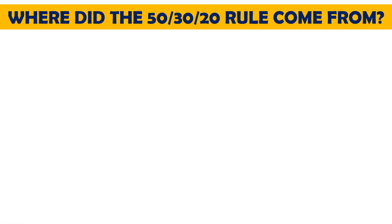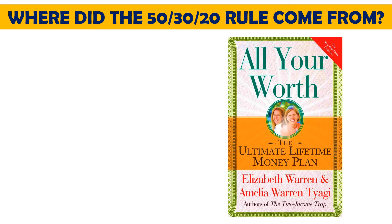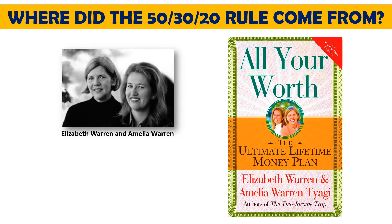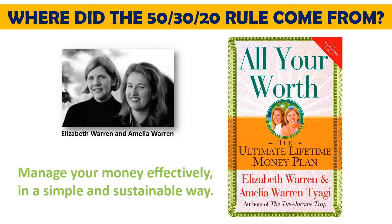Where did the 50-30-20 rule come from? This rule originates from the book 'All Your Worth: The Ultimate Lifetime Money Plan', written by Elizabeth Warren and her daughter Amelia Warren Taggy. This book will help you to manage your money effectively in a simple and sustainable way.